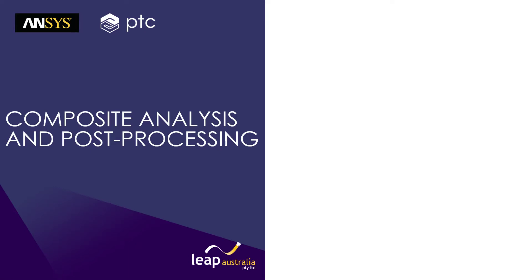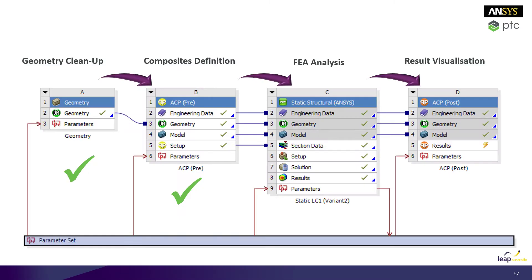The next part of the training is looking at analyzing our composite structure and post-processing it for specific results that are very specific to composite analysis. At this point, we've got our geometry cleanup sorted, we have our composite definition established, and we're passing it through into an FEA analysis where we'll apply loading and boundary conditions, and then we want to visualize the results.